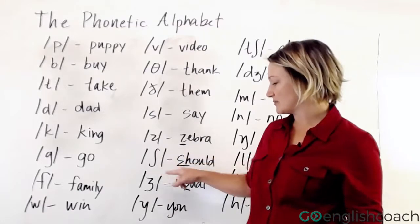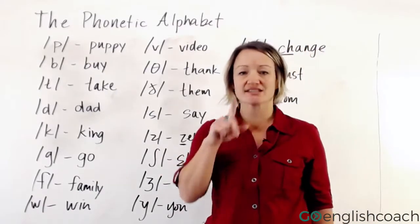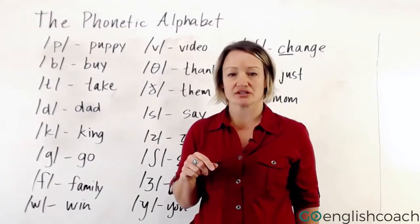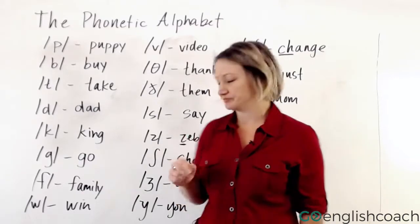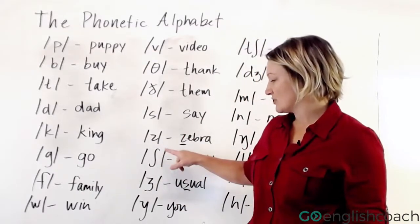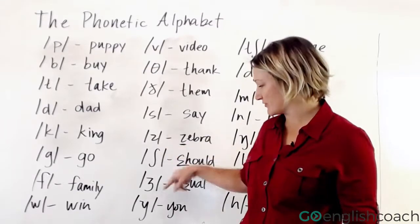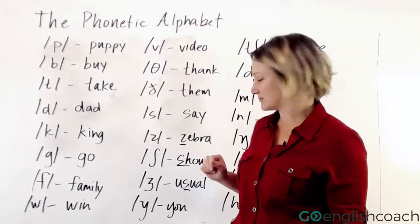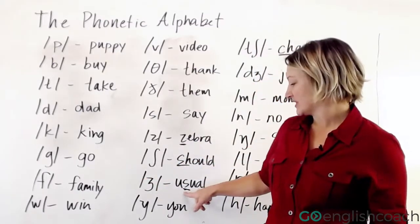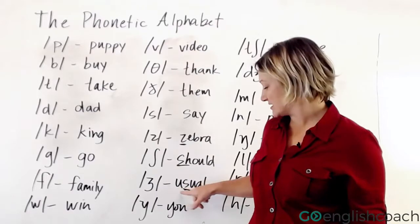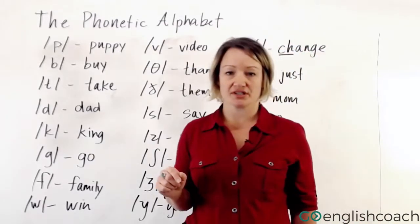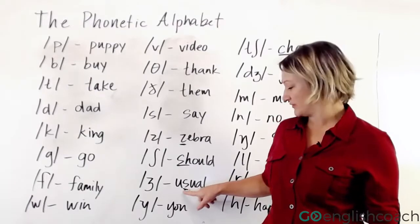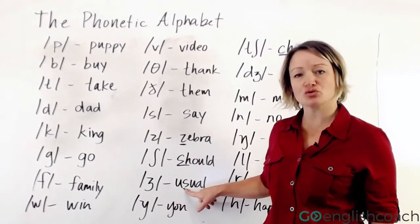This symbol makes the SH sound in English. Sh. Should. Shoo. We represent that with this kind of long-S-looking symbol. Should. Similar to this is the ZH sound, as in 'usual.' This is that ZH — usual.